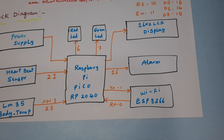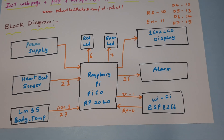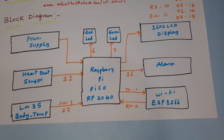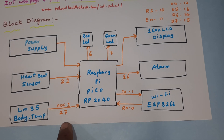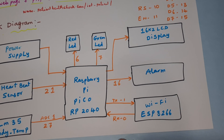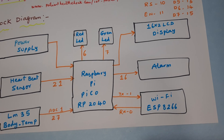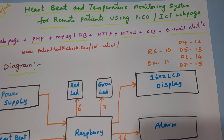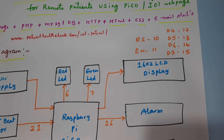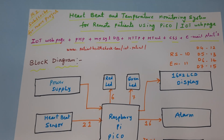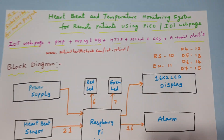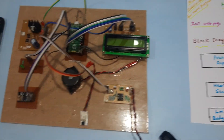The components include a heartbeat sensor, temperature sensor, Raspberry Pi Pico, red LED, green LED, 16x2 LCD display, alarm, and Wi-Fi module. The heartbeat sensor is connected to GPIO 21 ADC on pin 27, alarm on pin 16, Wi-Fi module on TX1/RX0, and LCD on RS, Enable, D4, D5, D6, D7 — pins 10 through 14.